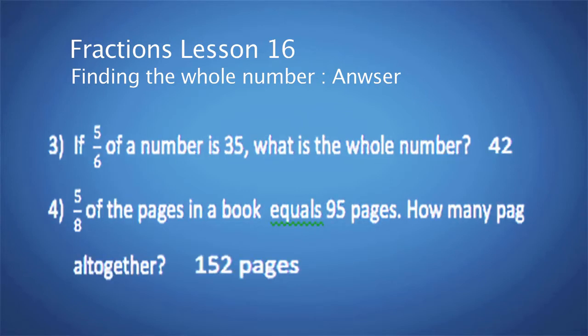Question 3: If five-sixths of a number is 35, what is the whole number? The whole number is 42. Question 4: Five-eighths of the pages in a book equals 95 pages. How many pages are in the book altogether? There are 152 pages altogether.